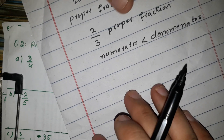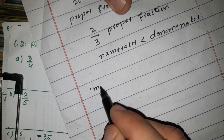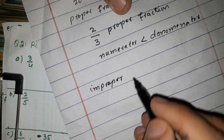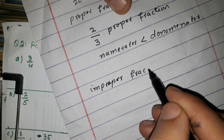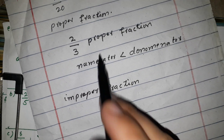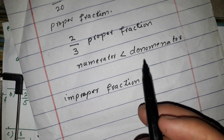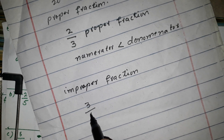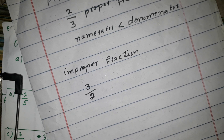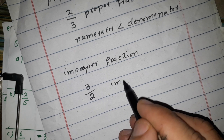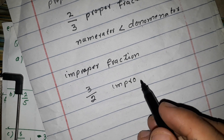Improper fraction: in an improper fraction, the numerator is greater than or equal to the denominator. The numerator is larger — that is an improper fraction.